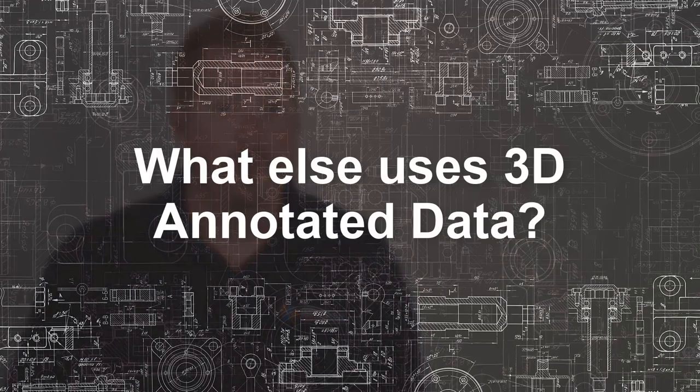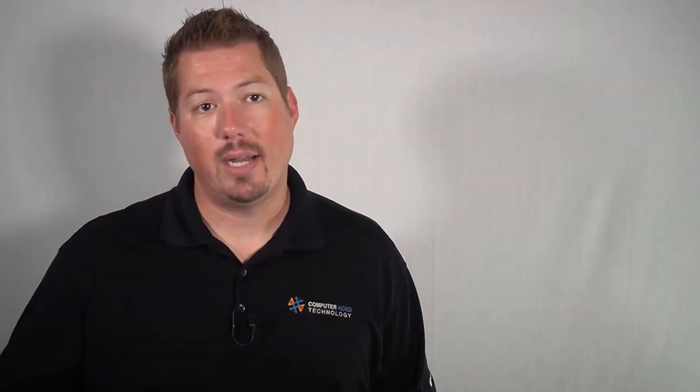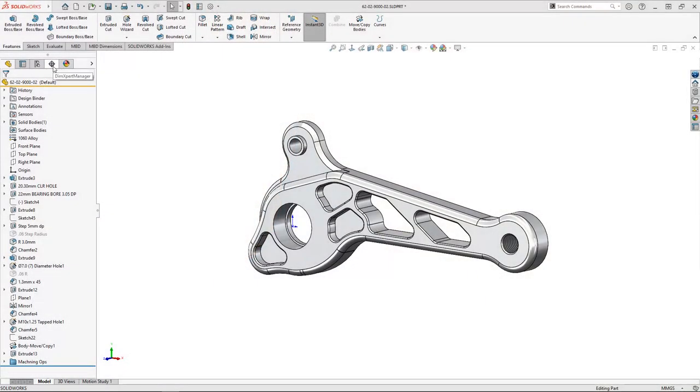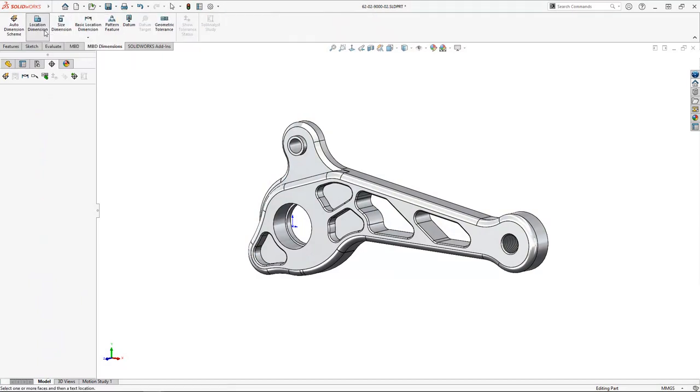Luckily, SOLIDWORKS MBD can overcome those with a workflow that's similar to what we do today, just a little different. The first critical difference is we want to start with end consumption in mind. Can we leverage the 3D data somewhere downstream in our process? Can we automate steps in the process of our CNC, faro arm, or some other tool that interprets 3D dimensional data? To start this workflow, we need to add dimensions and annotations directly to the 3D model geometry with DimXpert.